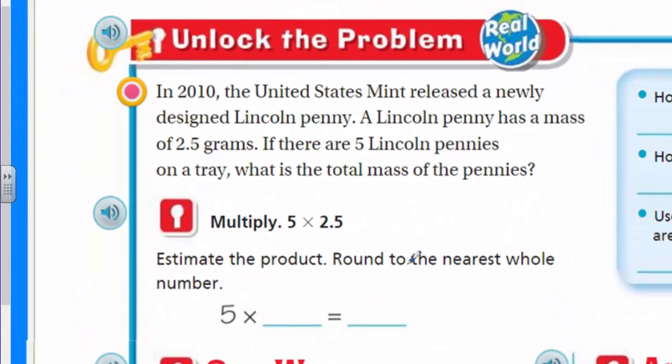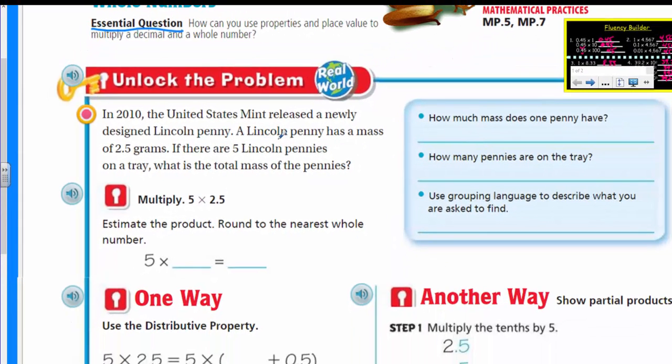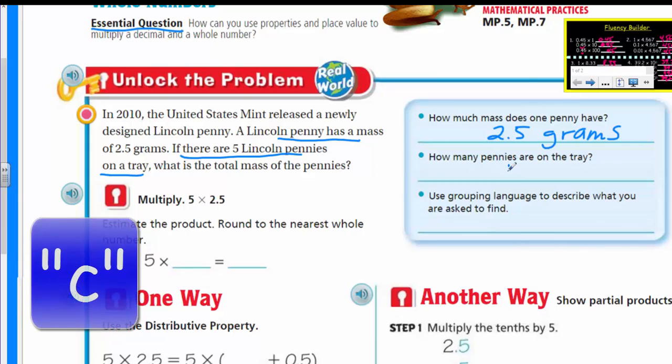All right. So first things. It says in 2010, the United States Mint released a newly designed Lincoln penny. A Lincoln penny has a mass of 2.5 grams. If there are five Lincoln pennies on a tray, what is the total mass of the pennies? Okay. We need to unlock this. This is how much mass does one penny have? This is helping us out here. And we can see that it tells us right here. Yes. 2.5 grams. So let's go ahead and get that down. How many pennies are on the tray? Well, I think it says that in the problem too. It says if there are five Lincoln pennies on a tray. So how many? We decided there were five. So let's go ahead and put five.